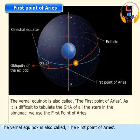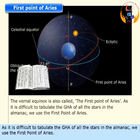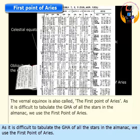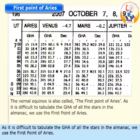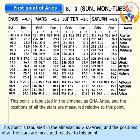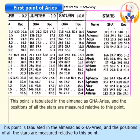The vernal equinox is called the first point of Aries. As it is difficult to tabulate the GHA of all the stars in the almanac, we use the first point of Aries. This point is tabulated in the almanac as GHA Aries, and the positions of all the stars are measured relative to this point.